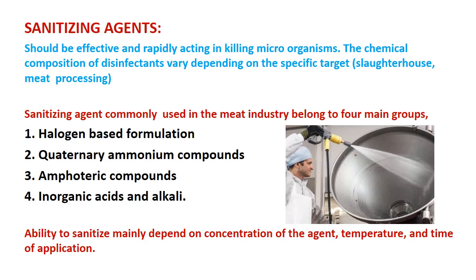Sanitizing agents used in the food industry belong to four main groups: halogen-based formulations, quaternary ammonium compounds, amphoteric compounds, and inorganic acids and alkalis. The ability to sanitize mainly depends on the concentration of the agent, temperature of the solution, and time of application. These three factors—concentration, temperature, and contact time—play a major role in the efficiency of the sanitizing agent.